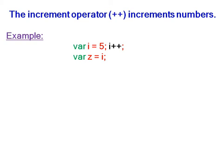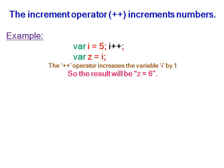The increment operator increments numbers; its symbol is double plus (++). In this example, variable i is equal to five and i is used with the increment operator (i++). Variable z is equal to i. The increment operator increases the variable i by one.